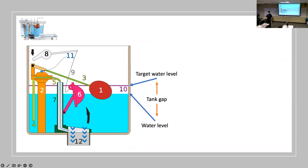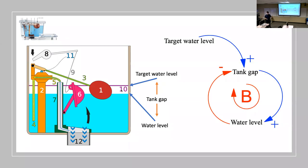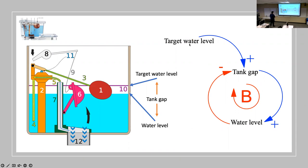That's the balancing feedback loop. As the water level rises, the tank gap gets smaller. If you have a large tank gap, the valve is turned on and water level starts rising faster. You can also adjust the target water level — for example, by screwing the float bulb higher or lower on its arm — which changes the tank gap but doesn't alter the balancing feedback loop itself.